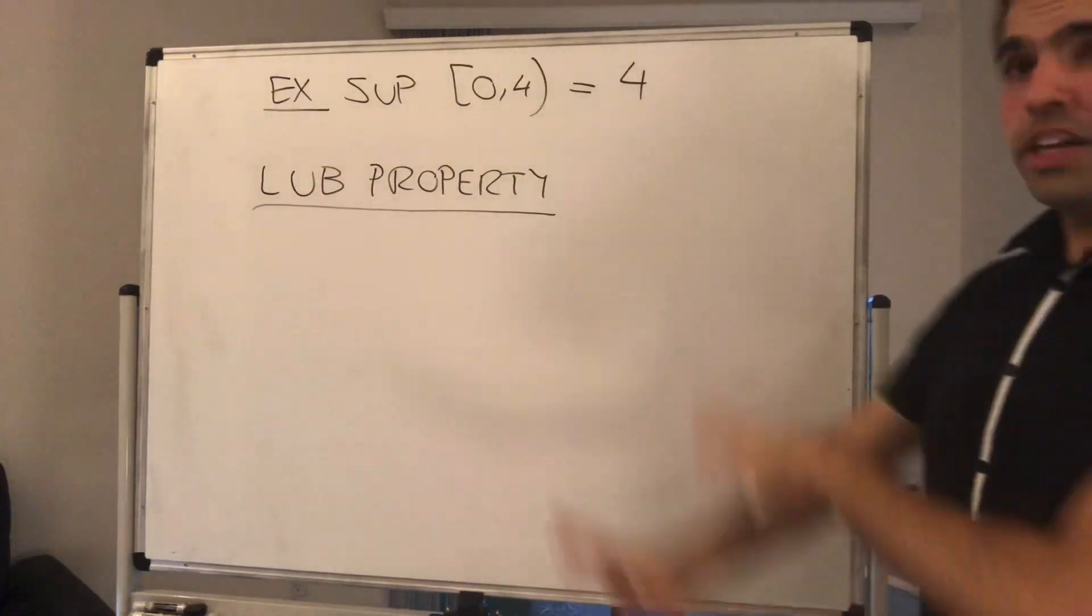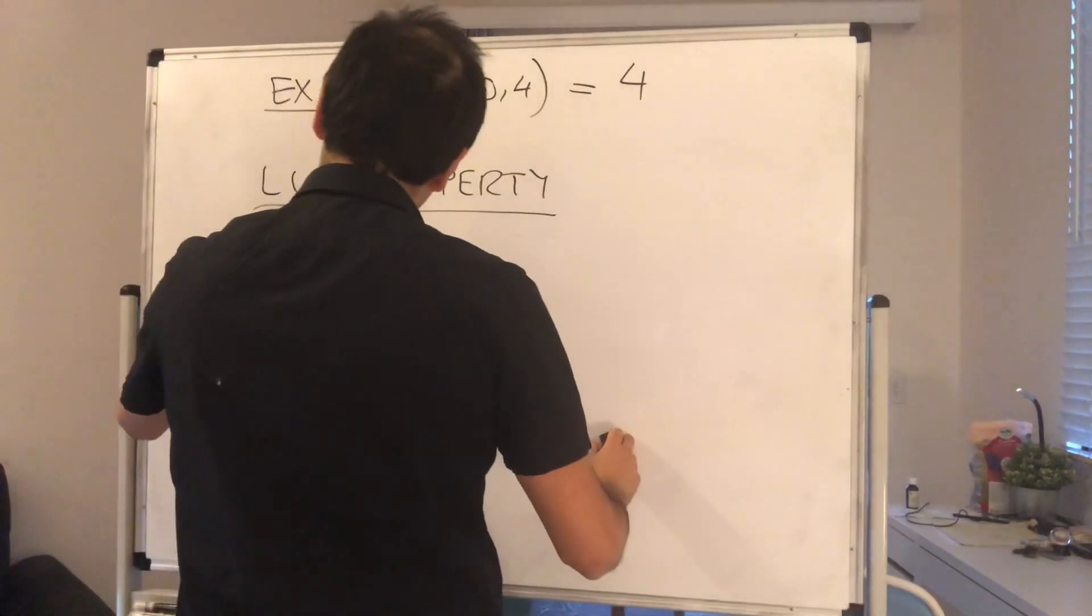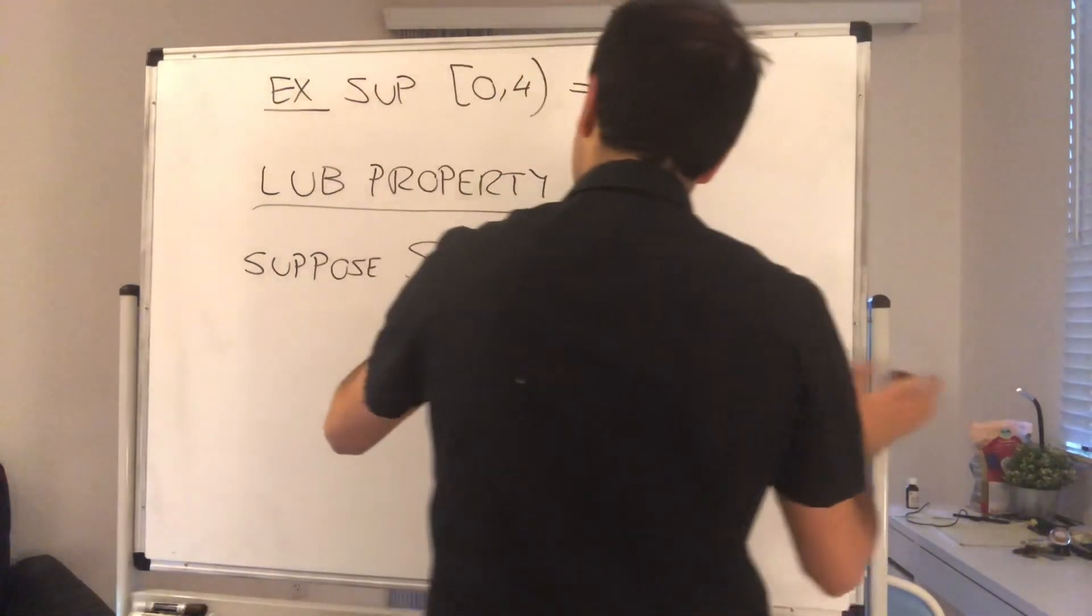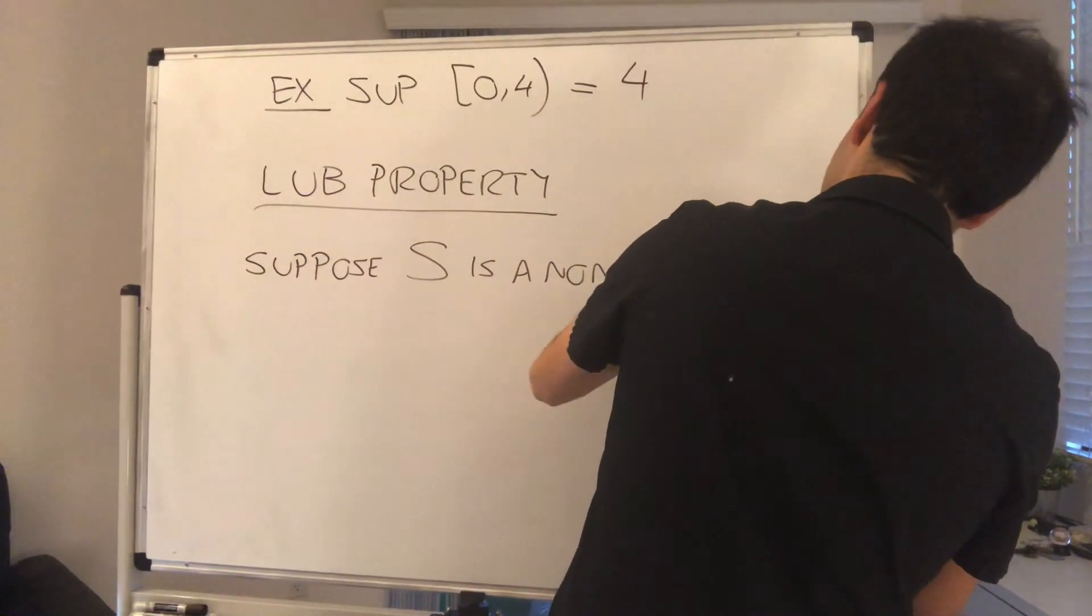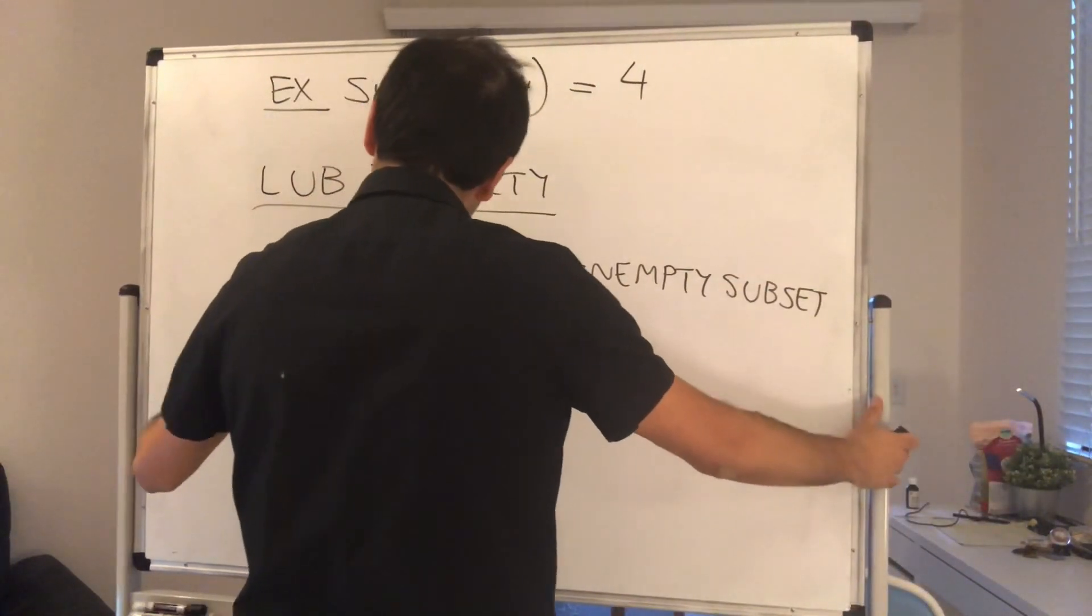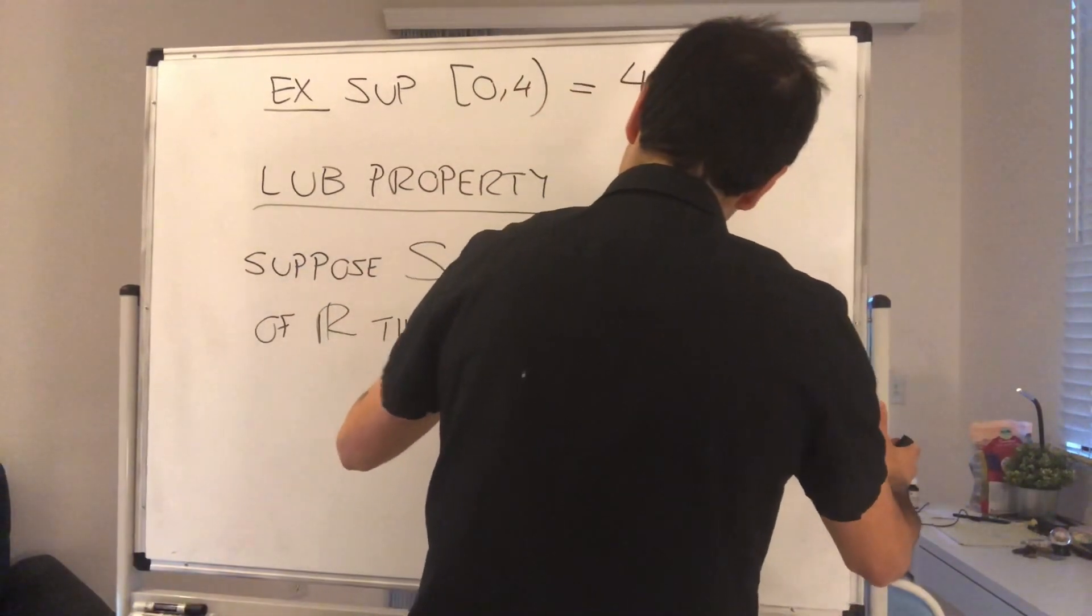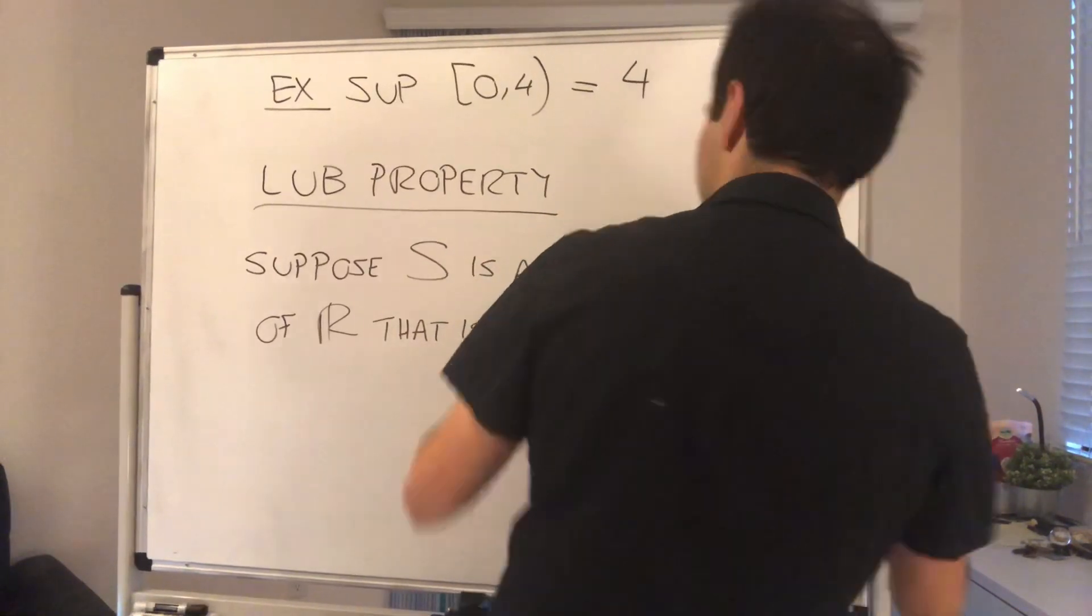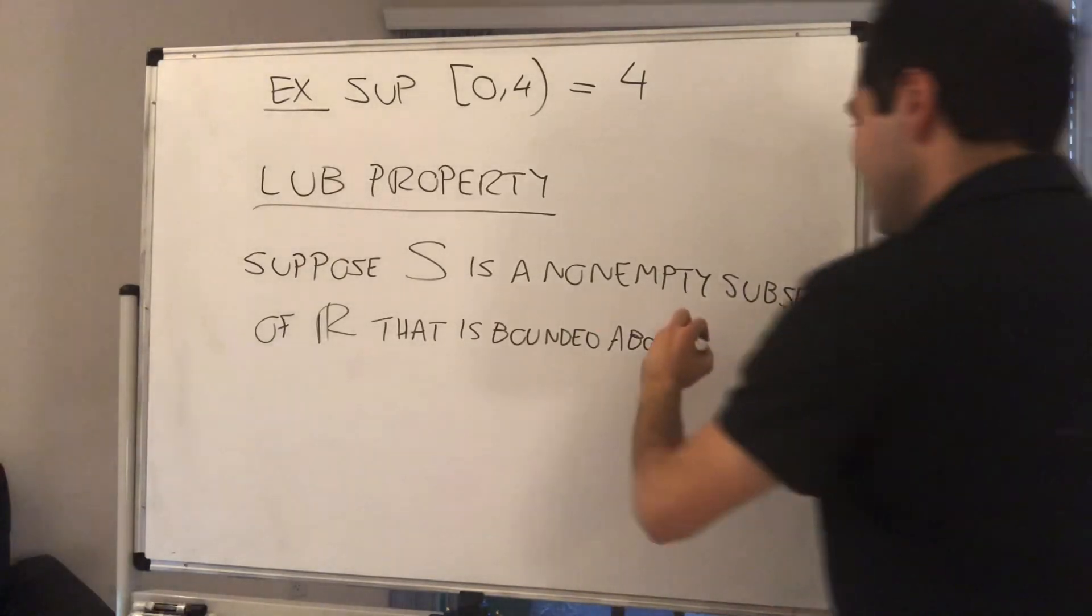So suppose S is a non-empty subset of R that is bounded above, which most of the cases, most of the sets we deal with have that property. Then, S has a least upper bound.